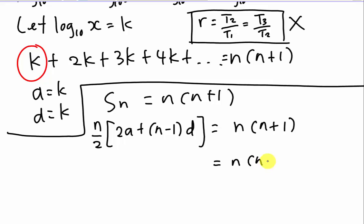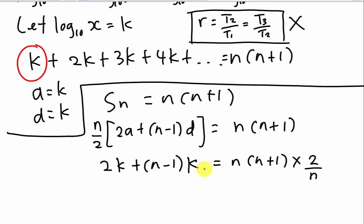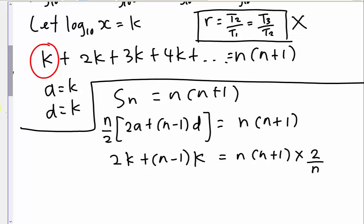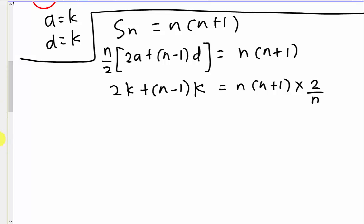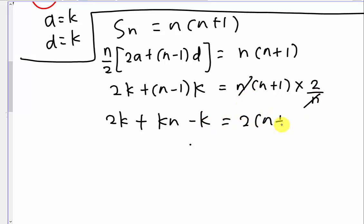After moving N/2 to the other side, I have 2K plus (N−1)K equals 2N(N+1)/N, which simplifies to 2N plus 1. Expanding the left side: 2K plus KN minus K, so K plus KN equals 2N plus 1.